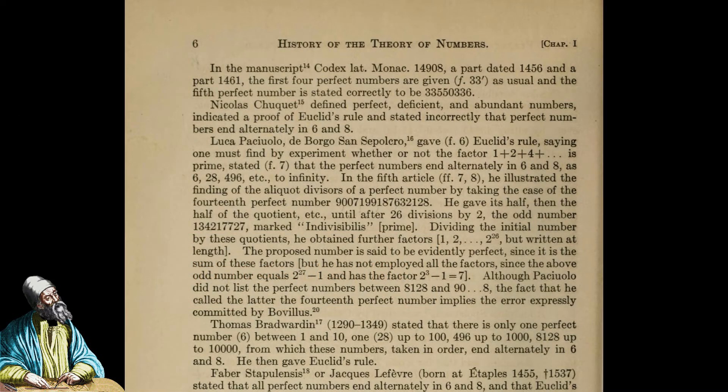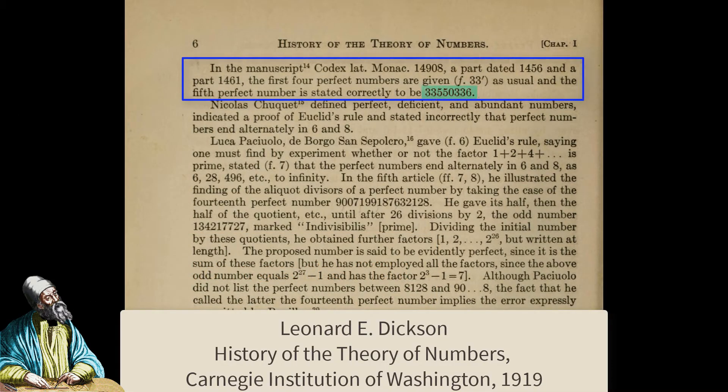After Euclid, over 1700 years passed before the fifth perfect number popped up in Germany.